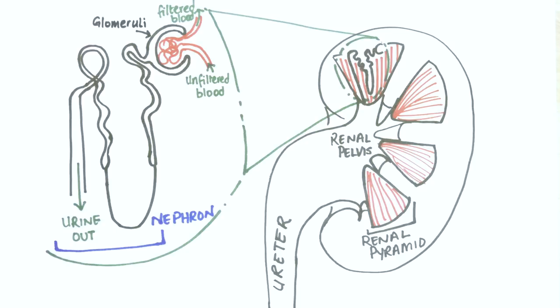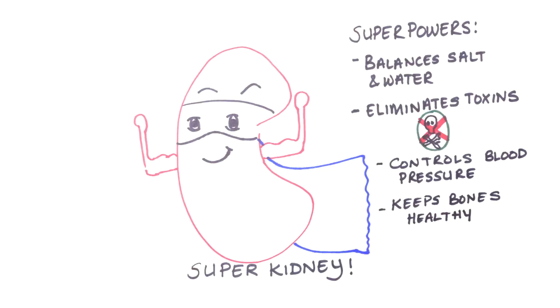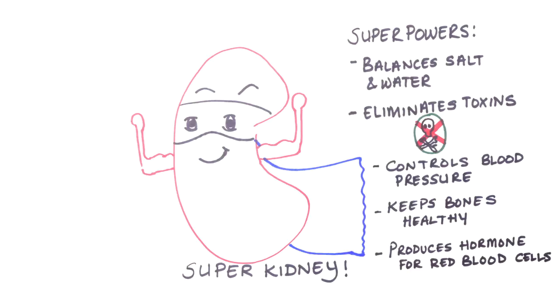In addition to making urine our kidneys control blood pressure. They help to keep our bones healthy by processing vitamin D and they produce a hormone called erythropoietin or EPO which is needed to make red blood cells. Of course all these incredible functions happen without most of us sparing them a second thought.